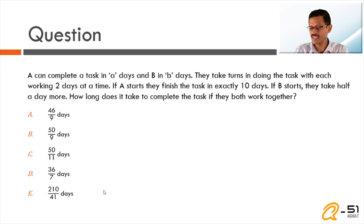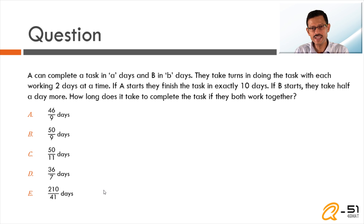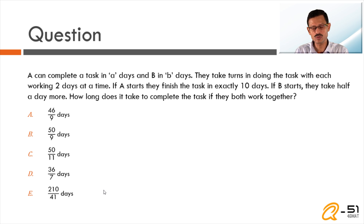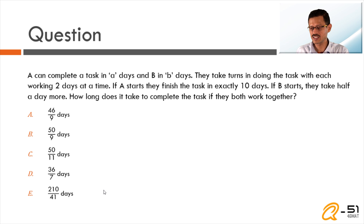The question: A can complete a task in 'a' days and B in 'b' days. They take turns doing the task, with each working two days at a time. If A starts, they finish the task in exactly 10 days. If B starts, they take half a day more. How long does it take to complete the task if they work together?